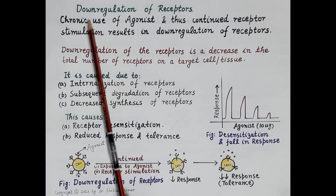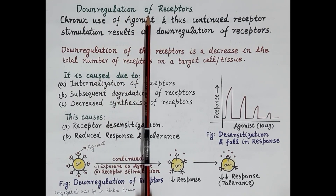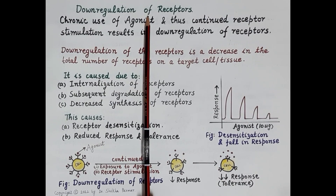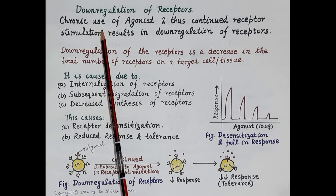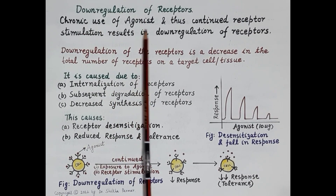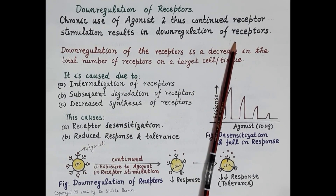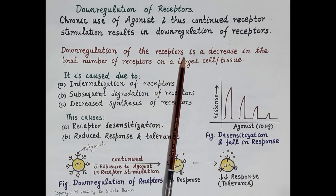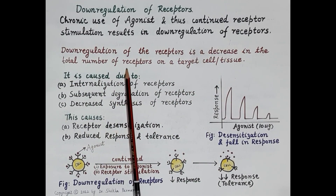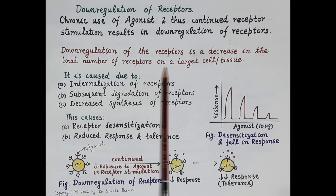Regulation of receptors involves two main phenomena: down regulation and up regulation of receptors. An agonist is an endogenous substance or a drug that binds to a receptor, activates or stimulates it, and produces a pharmacological action. Chronic or long-term use of an agonist, and thus continued receptor stimulation, results in down regulation of receptors, defined as a decrease in the total number of receptors on a target cell or tissue.